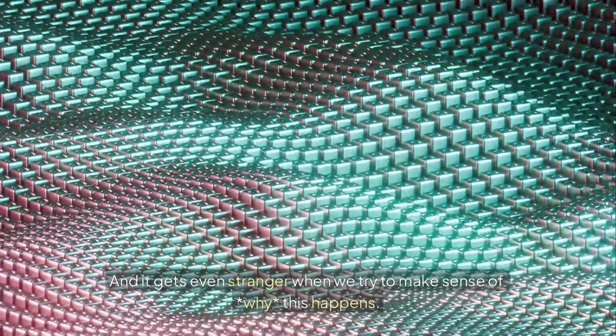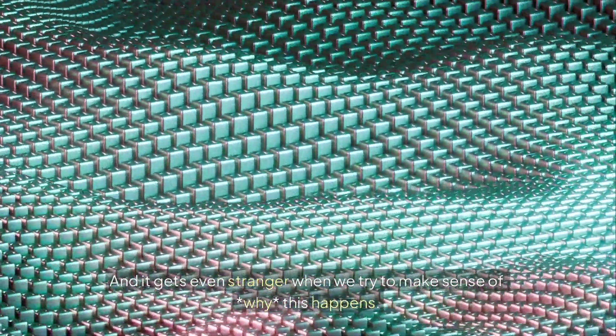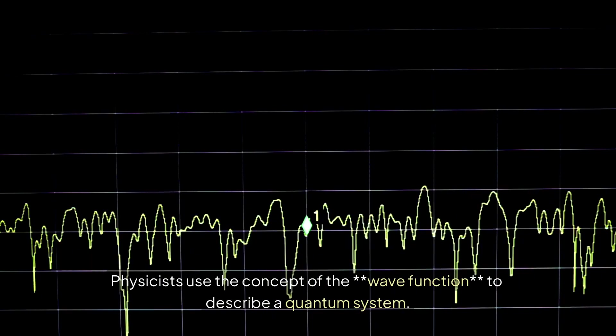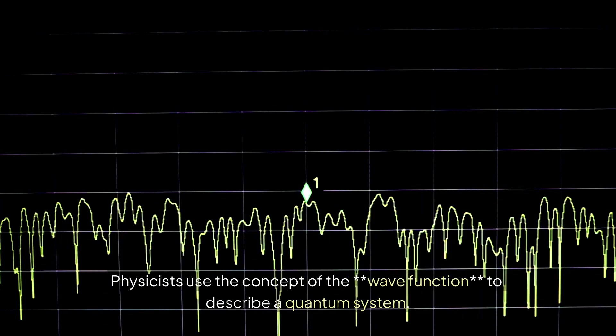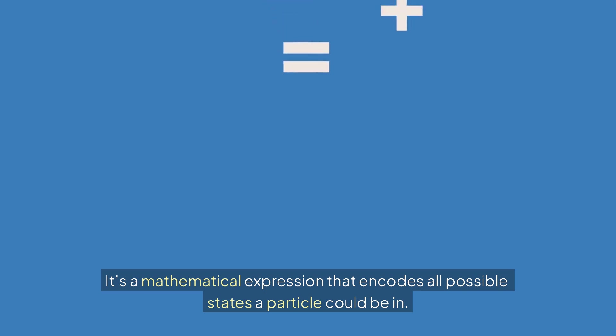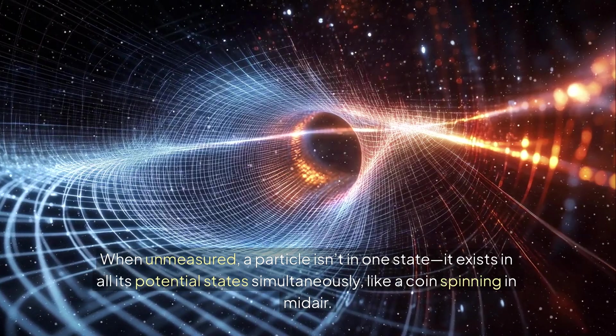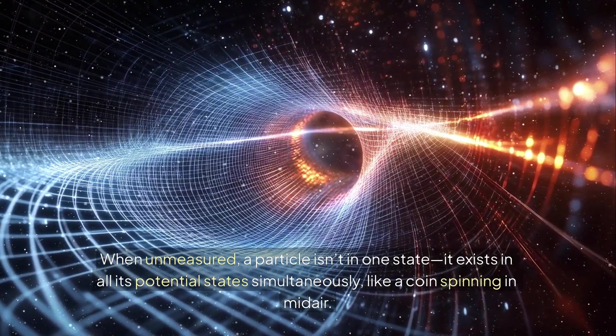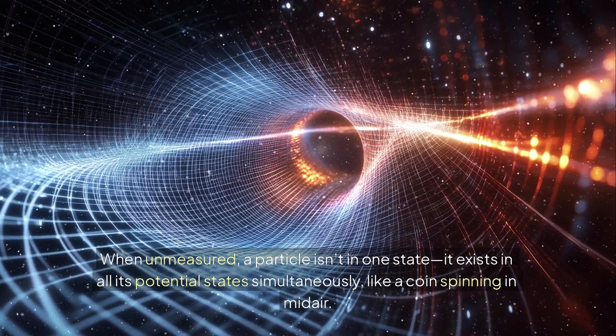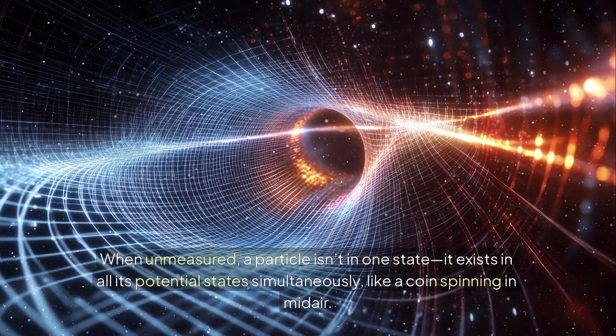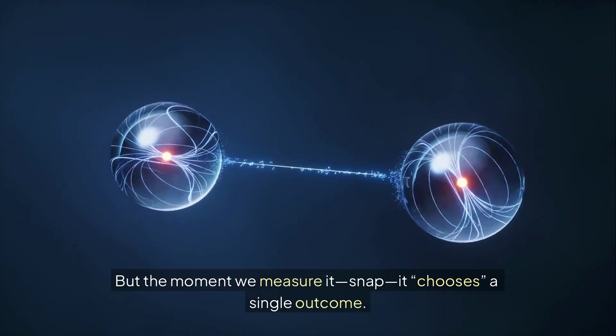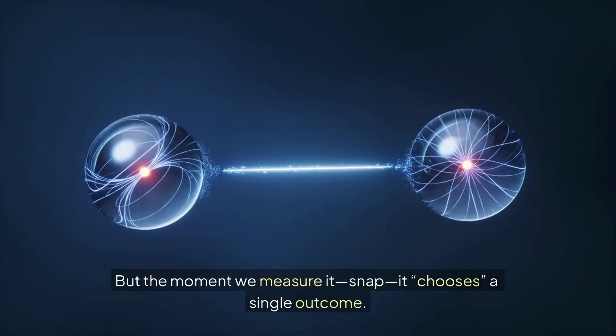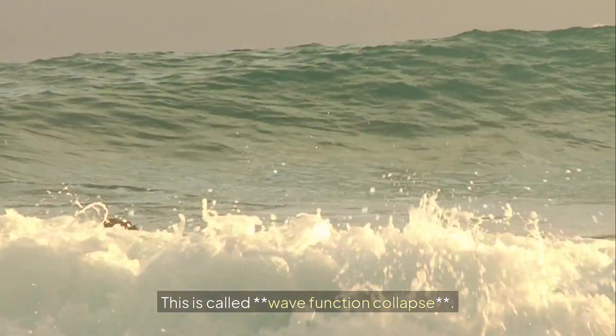And it gets even stranger when we try to make sense of why this happens. Physicists use the concept of the wave function to describe a quantum system. It's a mathematical expression that encodes all possible states a particle could be in. When unmeasured, a particle isn't in one state. It exists in all its potential states simultaneously, like a coin spinning in mid-air. But the moment we measure it, it chooses a single outcome. This is called wave-function collapse.